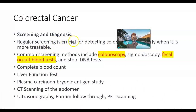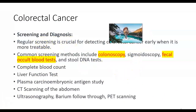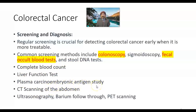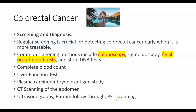Regular screening is crucial for detecting colorectal cancer early when it is more treatable. Common screening methods include colonoscopy — very popular in the United States — sigmoidoscopy, fecal occult blood test, and stool DNA test. Additional investigations include complete blood count, liver function tests, plasma carcinoembryonic antigen (CEA) — a tumor marker — CT scanning of the abdomen, ultrasonography, barium follow-through, and PET scanning, which can provide tissue slices from different angles to aid diagnosis.